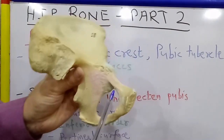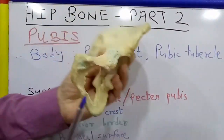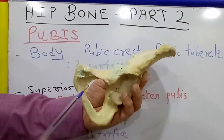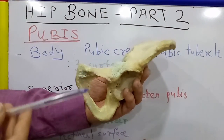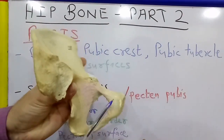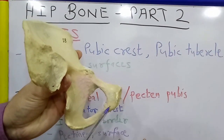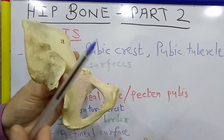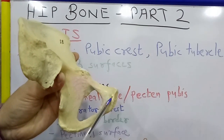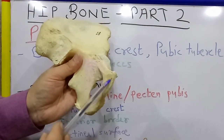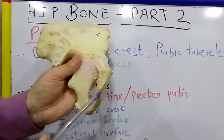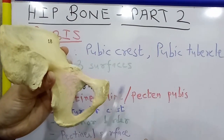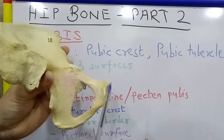There are three surfaces on the body of pubis. This is the anterior surface which faces downwards and forwards. This is the posterior surface of the body which faces upwards and backwards. This is the medial or symphysial surface which will articulate with the opposite pubis and forms the pubic symphysis.